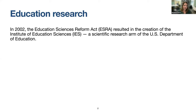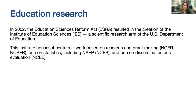About 20 years ago, there was something called the Education Science Reform Act, which created the Institute of Education Sciences — the scientific research arm of the Department of Education, kind of like the NIH of education but with a much smaller budget. This institute has four centers: two focused on research, one on statistics — the National Center for Education Statistics, where we see NAEP scores — and one on dissemination.